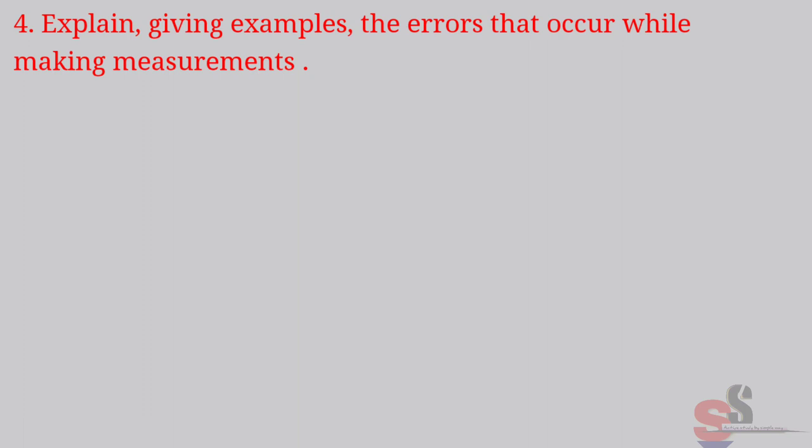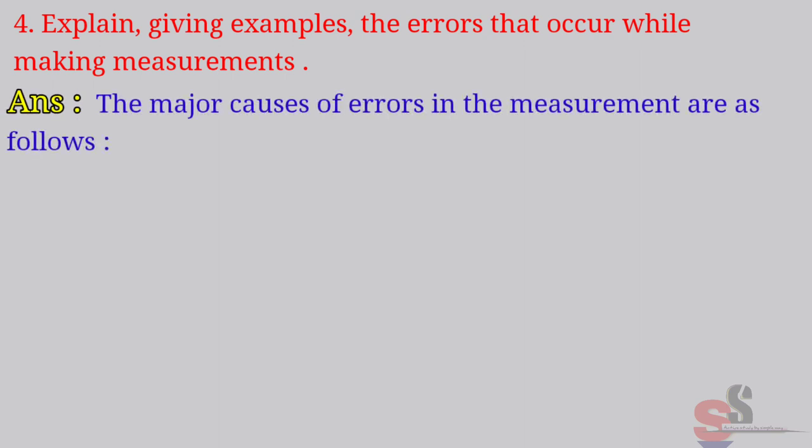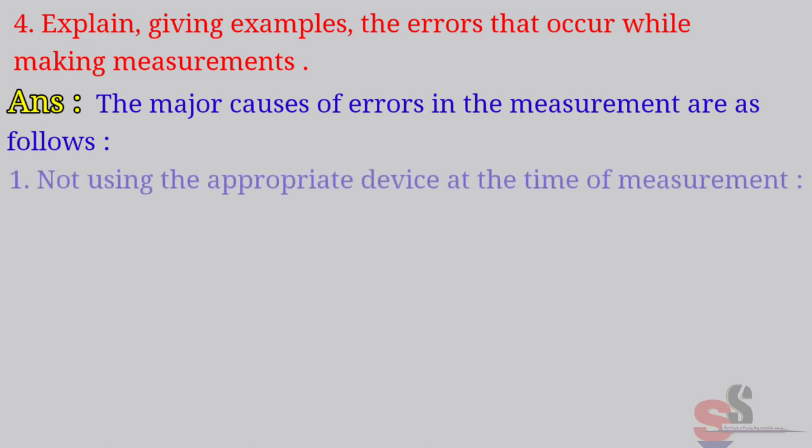Question 4: Explain giving examples the errors that occur while making measurements. Answer: The major causes of errors in the measurement are as follows. First one.